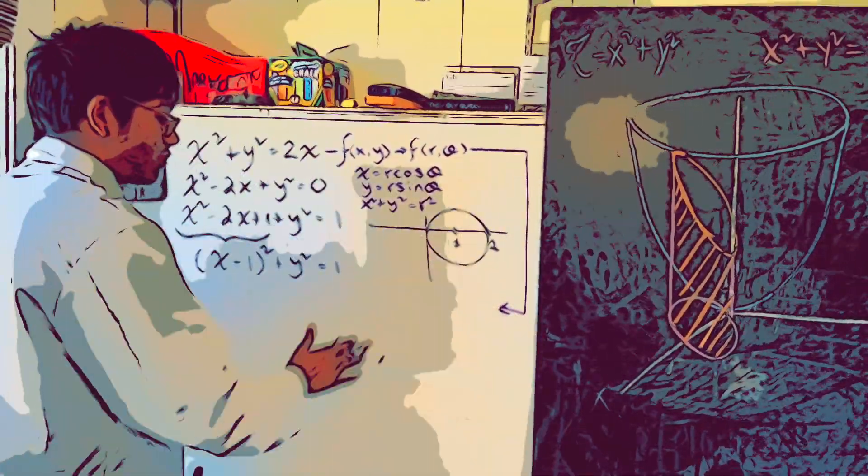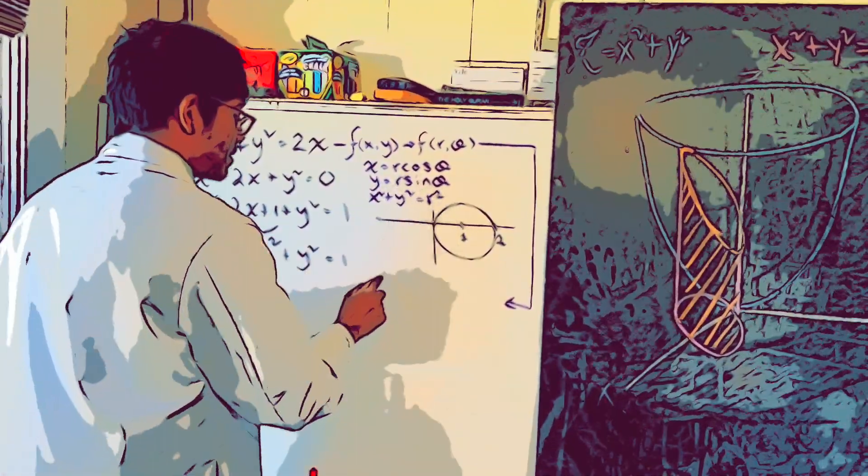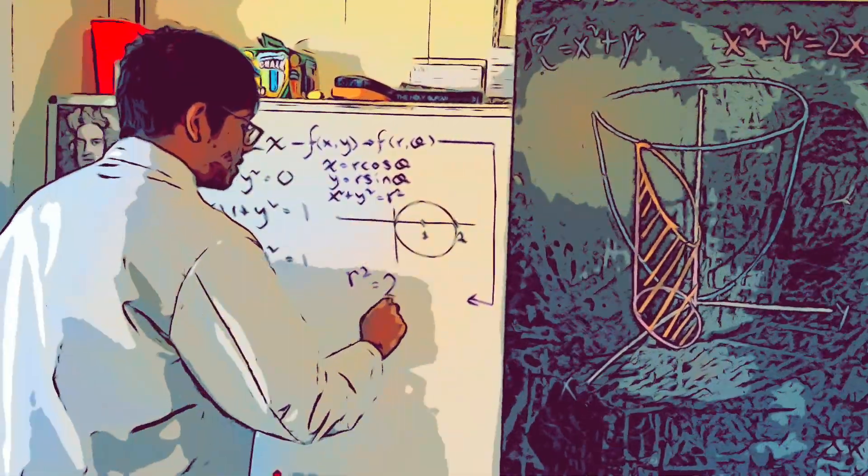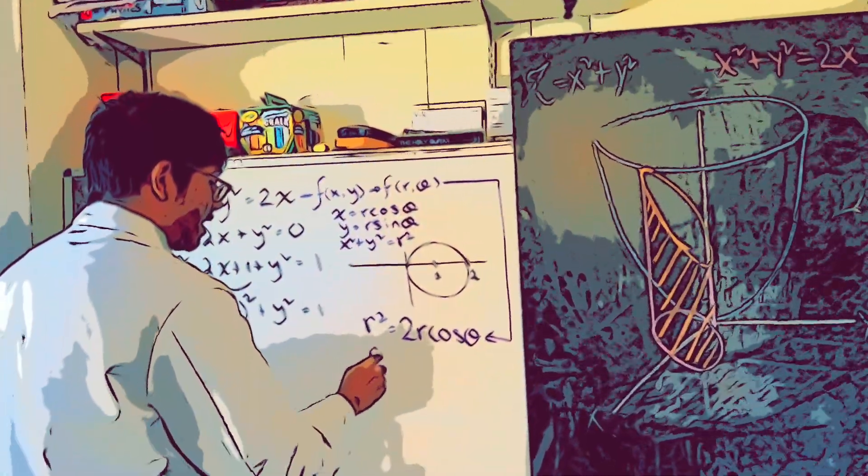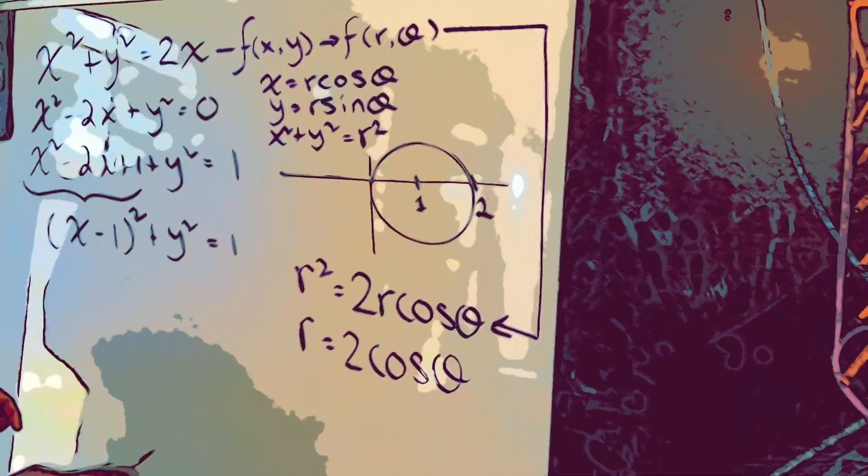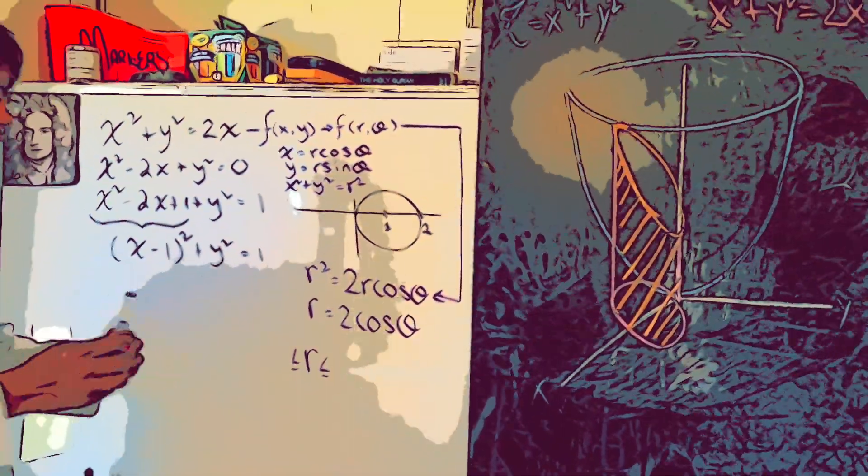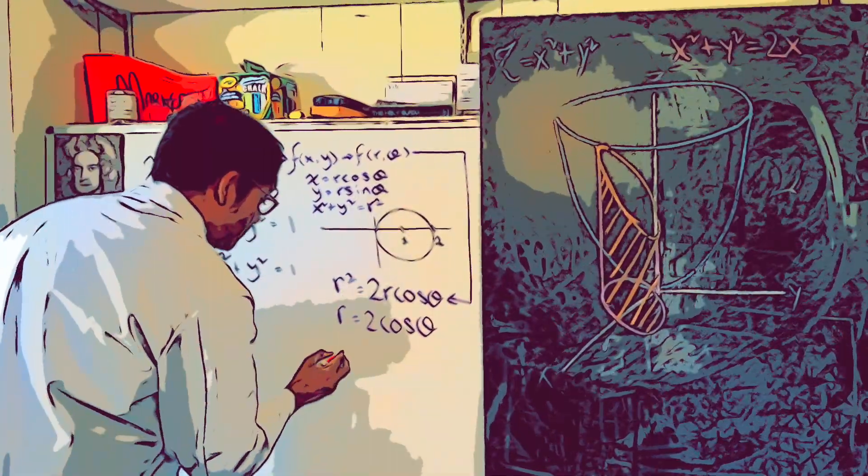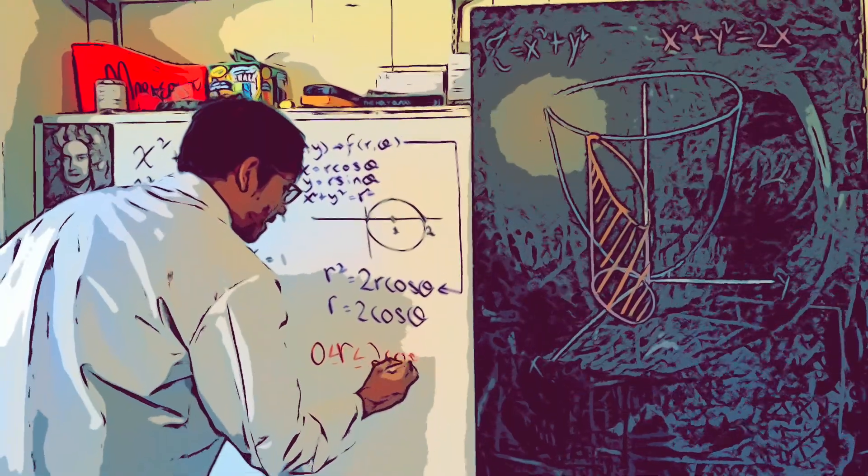So what is this going to become? X squared plus y squared, that becomes r squared equals 2 times x, which becomes 2 times r cosine theta. Divide by r on both sides, and I'm left with r equals 2 cosine theta. That means our radius, our r variable is going to go from what to what? Let me actually write this in red since it's so important. r is going to have limits of integration from 0 to 2 cosine theta.